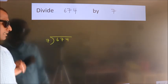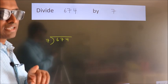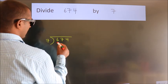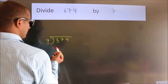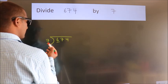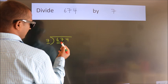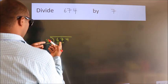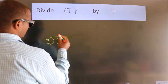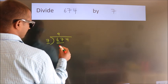This is your step 1. Next, here we have 6, here 7. 6 is smaller than 7, so we should take two numbers, 67. A number close to 67 in the 7 table is 7 nines, 63.